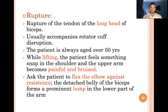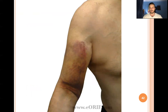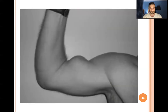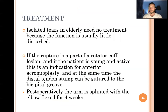If the biceps tendon ruptures acutely — for example during weightlifting in the gym — young adults may feel and hear a pop in the shoulder. Bruising and hematoma may appear in the arm. The classic presentation is a bulge in the bicipital region called the Popeye sign. In elderly patients, conservative management is appropriate. For young, active patients, surgical repair is performed — reattaching the bicipital tendon to the humerus using anchor sutures.